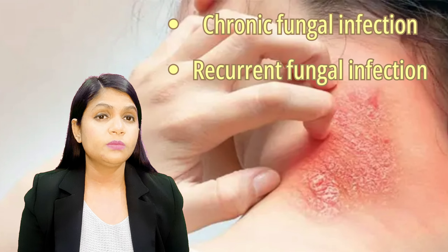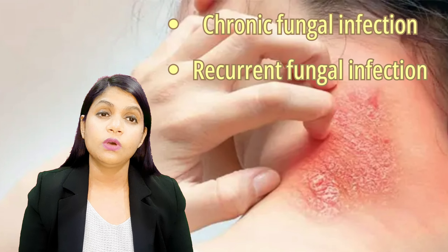If you have the problem of fungal infection, or if you have the problem of chronic fungal infection, or if you have the problem of recurrent fungal infection, in all these conditions you can use this patent combination drop. In this video, I will tell you about the indication of this homeopathic patent medicine — R82 drop — in which condition you have to take this medicine, the doses of the medicine, what is the fungal infection, what are the causes behind it, what are the symptoms, and how can we prevent it.